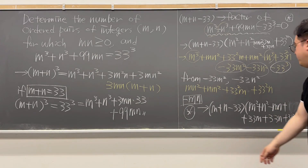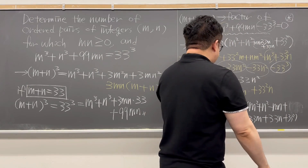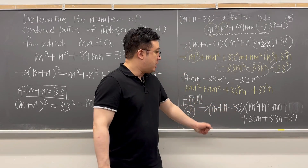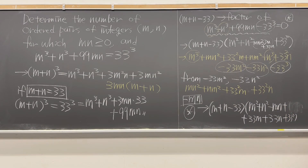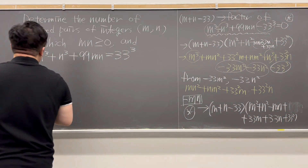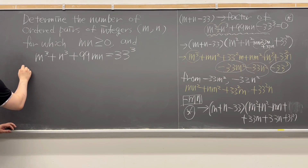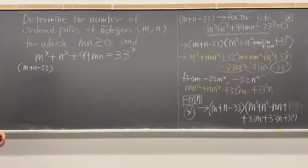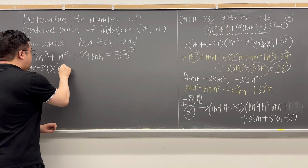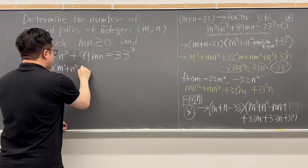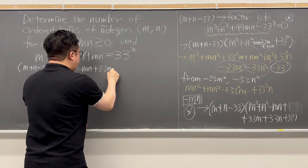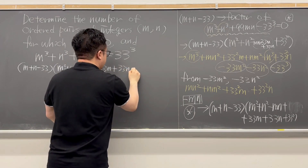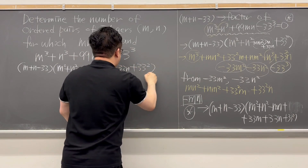So the starred equation is now completely factored as (m plus n minus 33) multiplied by (m squared plus n squared minus mn plus 33m plus 33n plus 33 squared).